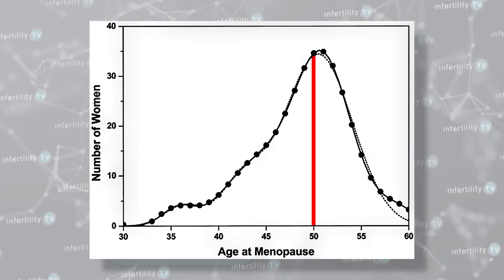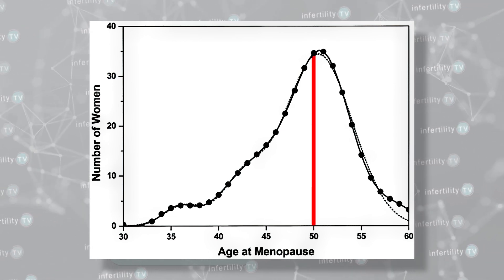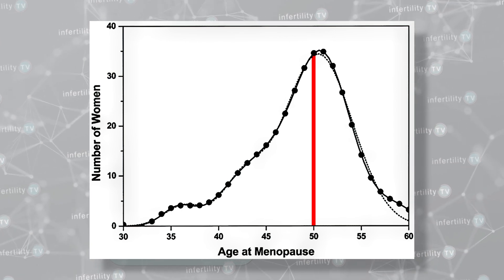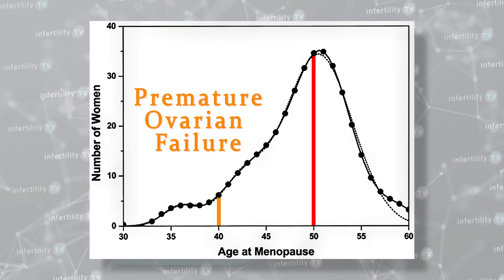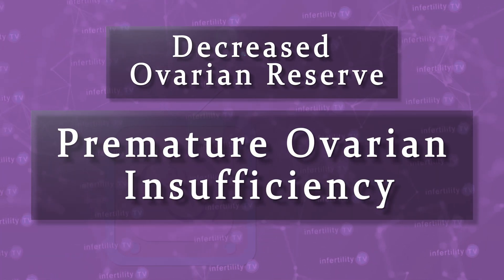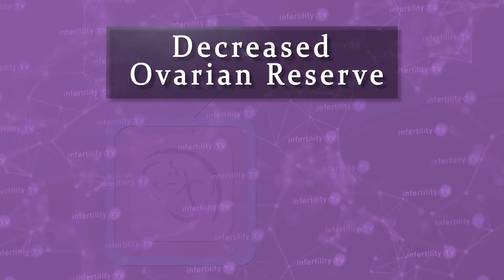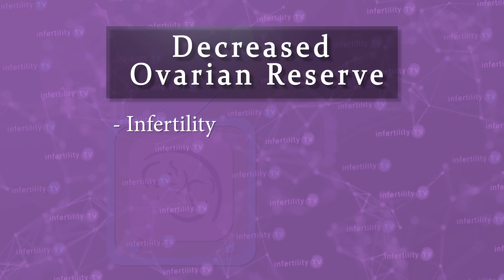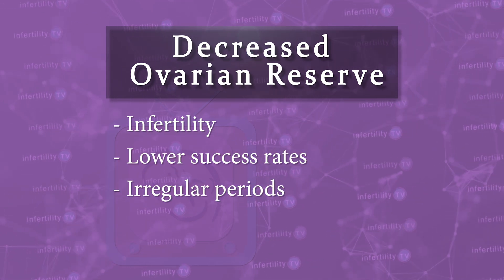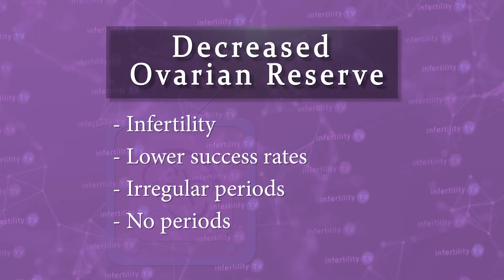Menopause, or ovarian failure, occurs when the reserve of eggs has been depleted. The average age for menopause is 50. Some women, however, will see their supply of eggs drop more rapidly. If ovarian failure occurs before the age of 40, we call it premature ovarian failure. Prior to complete ovarian failure, women may experience less severe stages — a spectrum of ovarian function. Women with decreased reserve may experience infertility, lower pregnancy rates with fertility treatments, irregular periods, and sometimes their periods will stop coming.